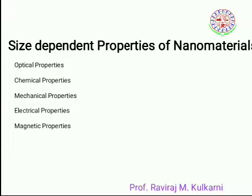What are the size-dependent properties of nanomaterials? There are many, but we will discuss five: optical properties, chemical properties, mechanical properties, electrical properties, and magnetic properties. These properties change drastically when you go from bulk to nanomaterials.